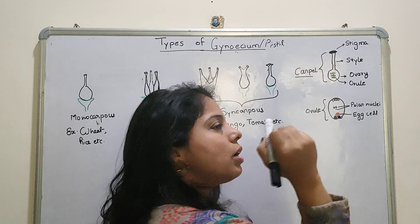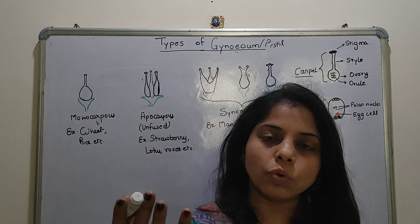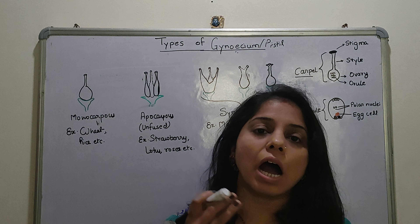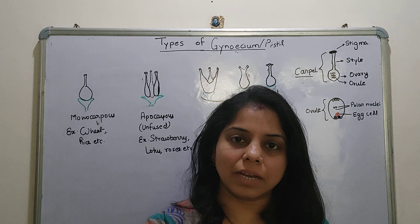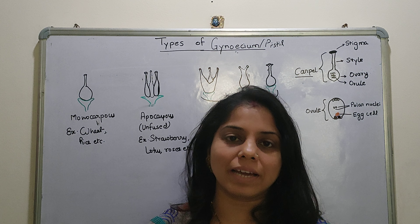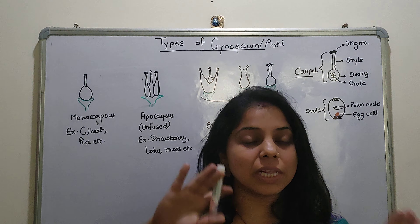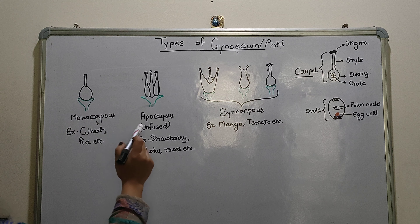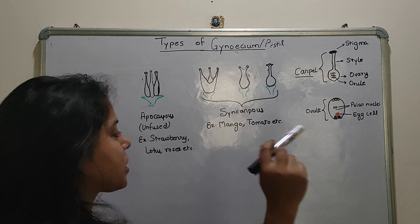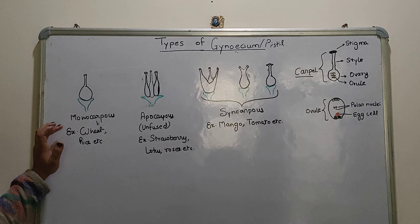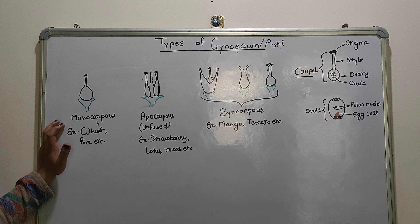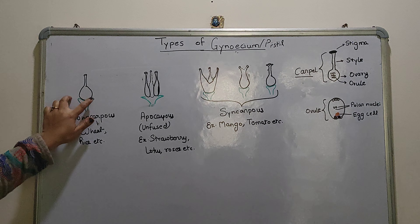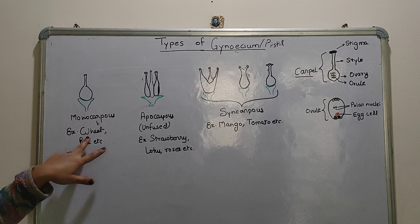The Ovary is that part in which the egg cell is received — it is very important for receiving the male gamete. This egg cell ultimately gets converted into a zygote and then an embryo after fertilization. The ovule then develops into a seed, continuing reproduction.